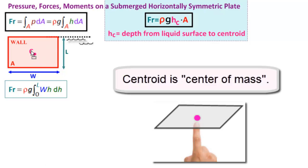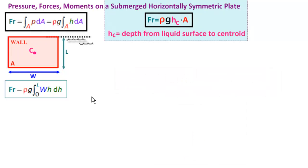So for a rectangle, the centroid is right smack in the middle. So, coming from the top of the surface to the centroid, this is hc, and we can see that hc equals L divided by 2. Let's write that down. hc here equals L divided by 2.